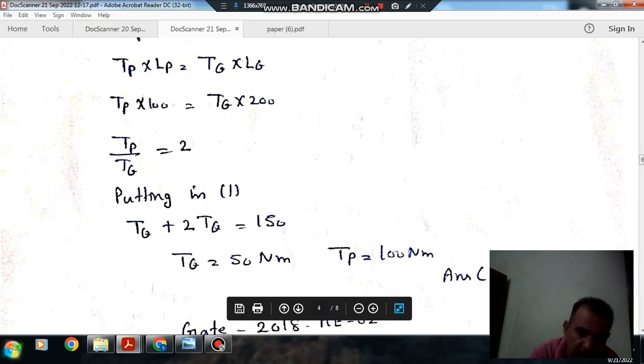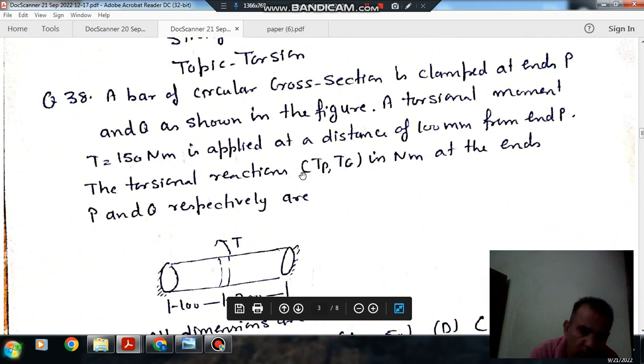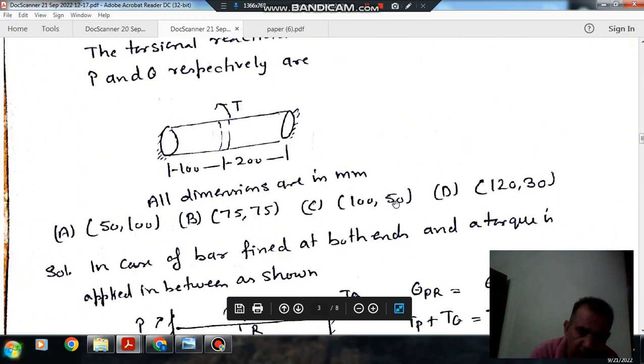So Tq equals 50 Nm and Tp equals 100 Nm. Therefore the answer is option C.